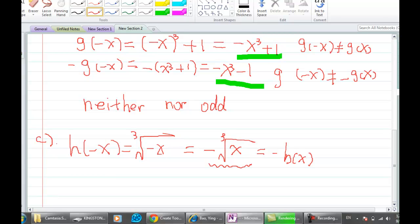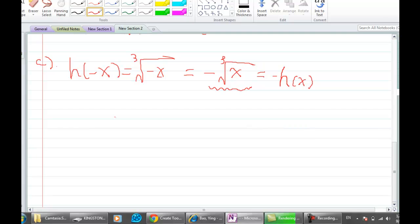And it turns out to be our -h(x), right? So which one is it? h is odd. Exactly, very good.